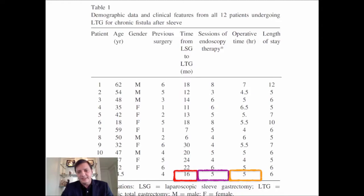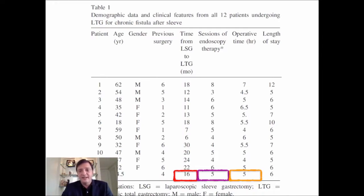— this paper presents you with 12 patients that had a mean time from sleeve gastrectomy to treatment of 16 months, around five sessions of endoscopy, and operative times of five hours.